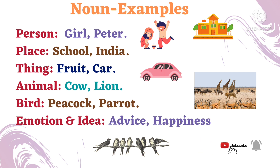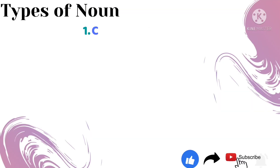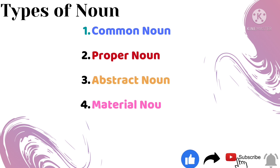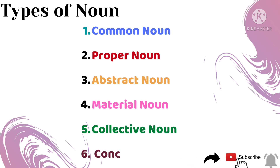Hope you now understand what a noun is. Let's move to the types of noun. The types of noun are: common noun, proper noun, abstract noun, material noun, collective noun, and concrete noun.